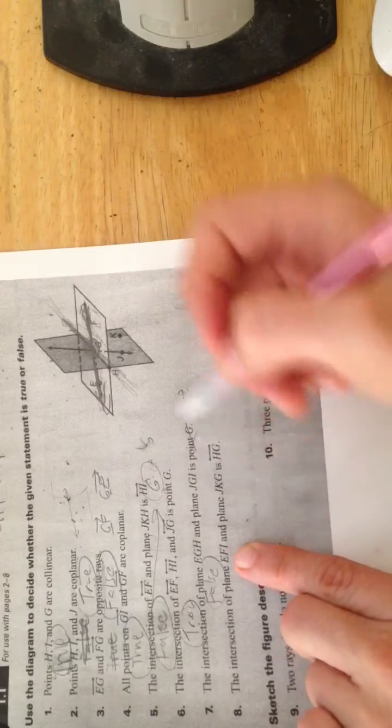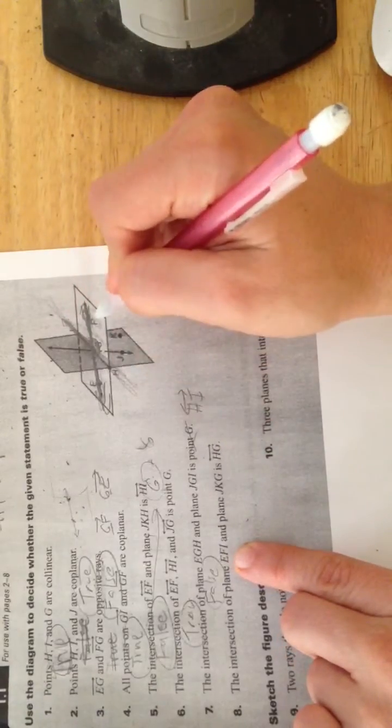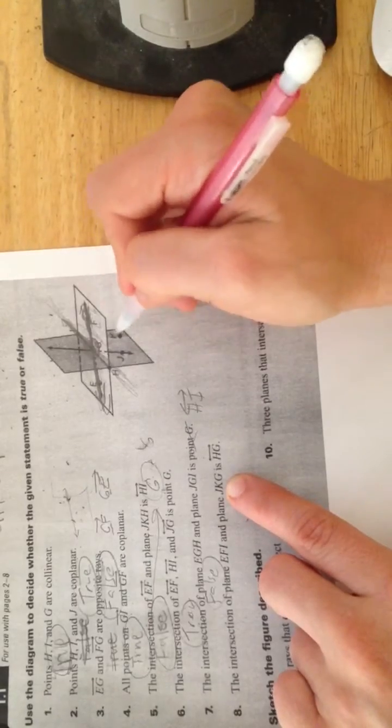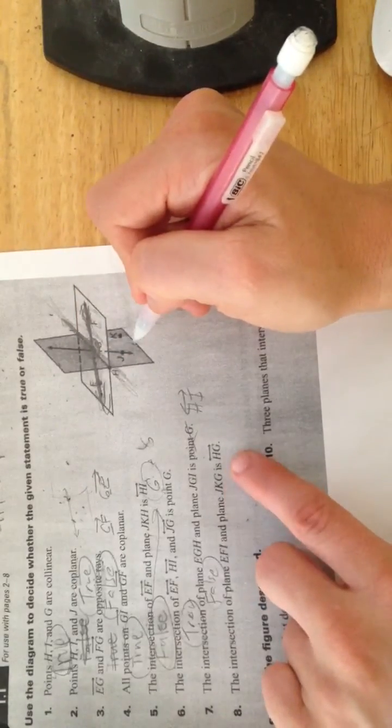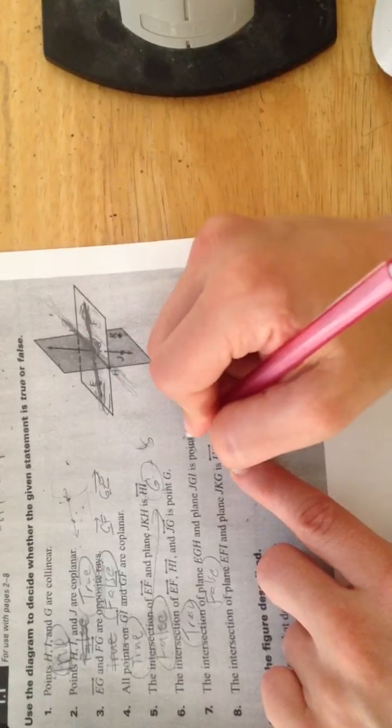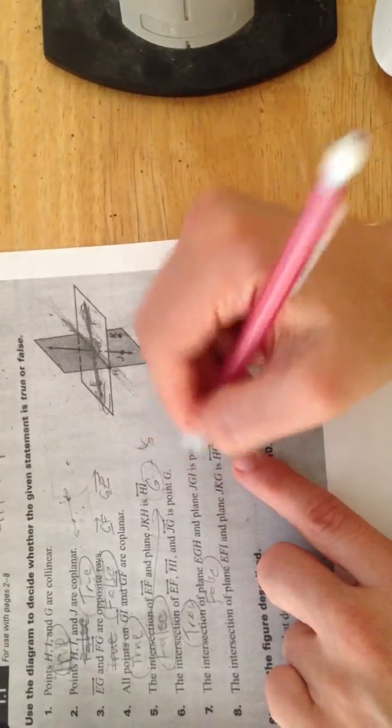Intersection of plane EFI, that plane there, and JKG, the other plane is HG. Yeah, I mean, this is basically what we were saying here, just with different words. They described the two, only two planes that they've shown, which is with different letters.